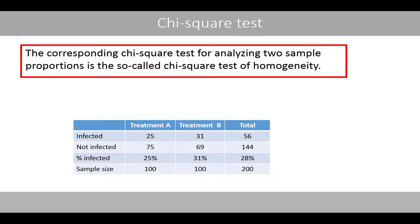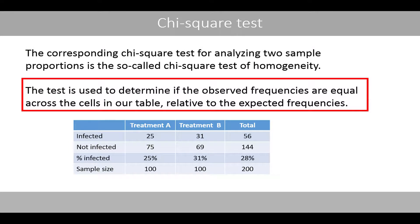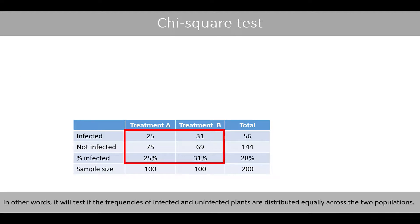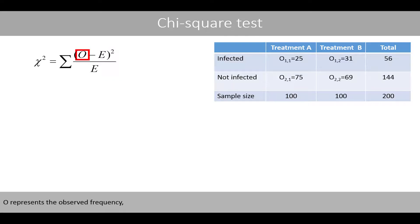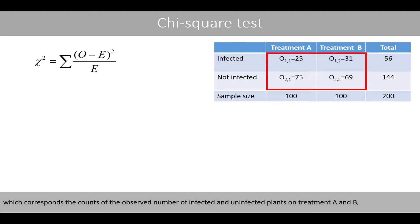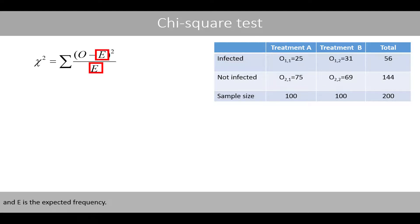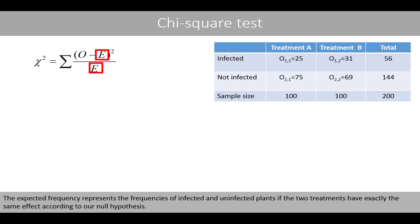The corresponding chi-square test for analyzing two sample proportions is the chi-square test of homogeneity. The test is used to determine if the observed frequencies are equal across the cells in our table relative to the expected frequencies — in other words, it tests if the frequencies of infected and uninfected plants are distributed equally across the two populations. The formula looks exactly like the chi-square goodness-of-fit test, where O represents the observed frequency and E is the expected frequency, which represents the frequencies if the two treatments have exactly the same effect according to the null hypothesis.